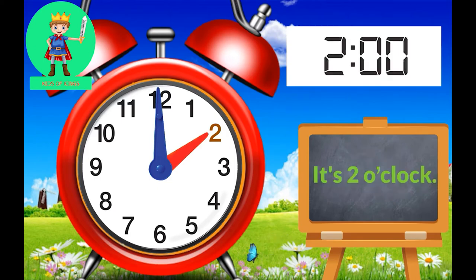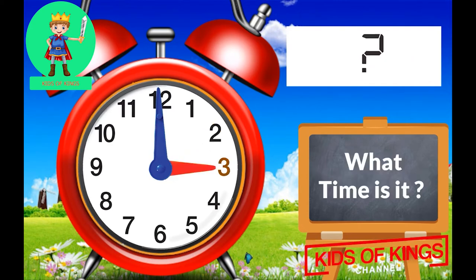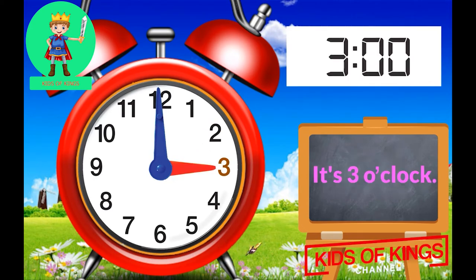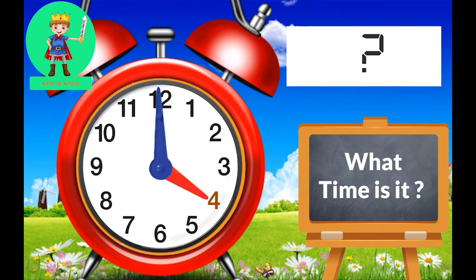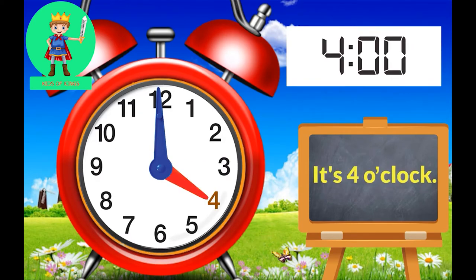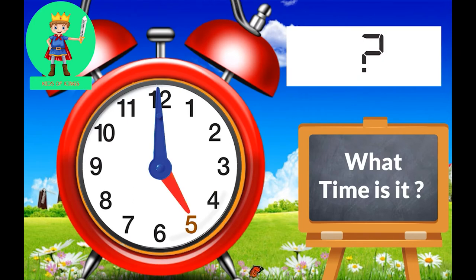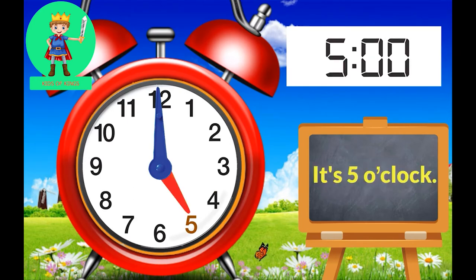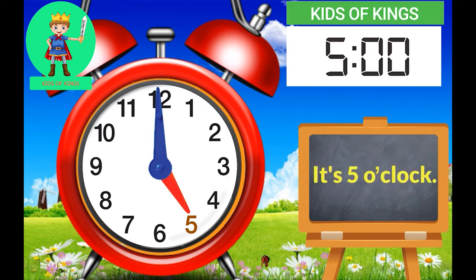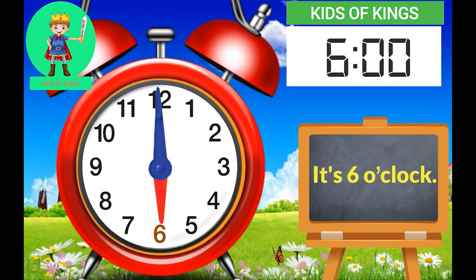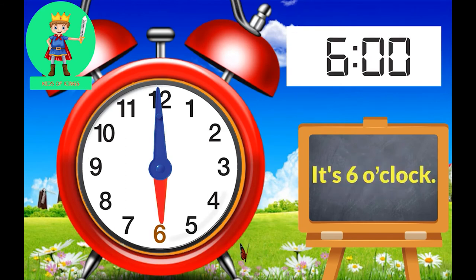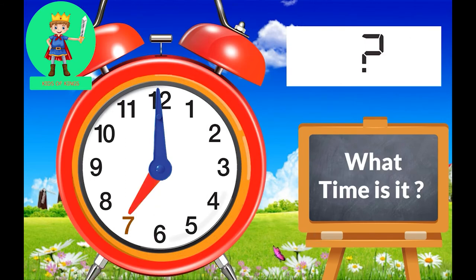What time is it? It is two o'clock. What time is it? It is three o'clock. What time is it? It is three o'clock. What time is it? It is four o'clock. What time is it? It is five o'clock. What time is it? It is six o'clock. What time is it? It is six o'clock. What time is it? It is seven o'clock.